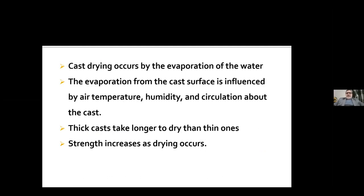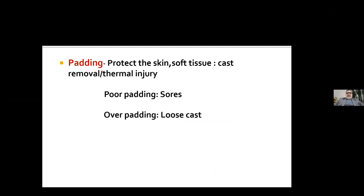Cast drying occurs by evaporation of water. Evaporation from the cast surface is influenced by air temperature, humidity, and circulation about the cast. Thick casts take longer to dry than thinner ones, and strength increases as drying occurs. Regarding padding: padding protects the skin and soft tissue during cast removal and protects the skin from thermal injury. Poor padding leads to pressure sores, and over-padding leads to a loose cast. Padding has to be appropriate — we should not compress the padding by more than 50%.